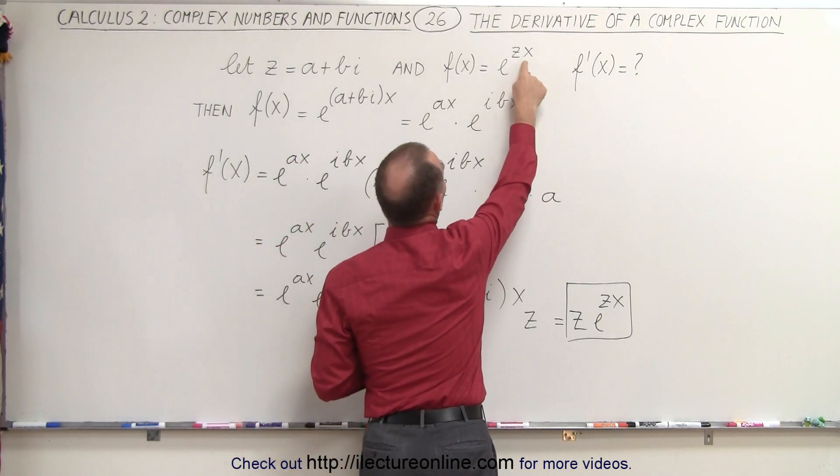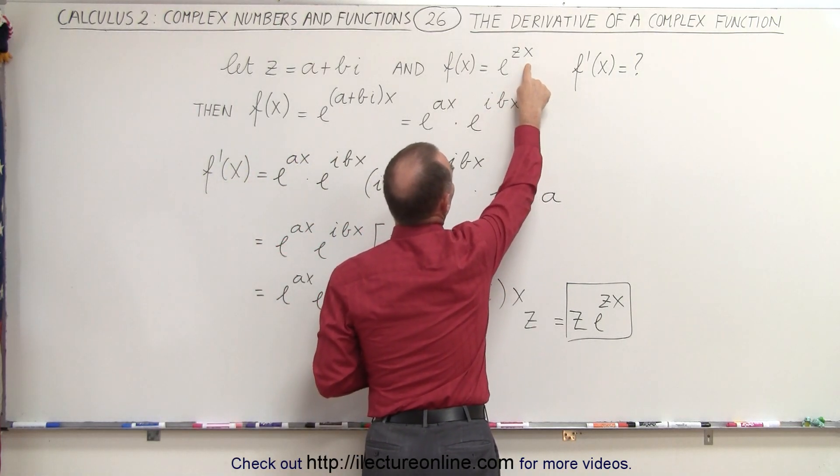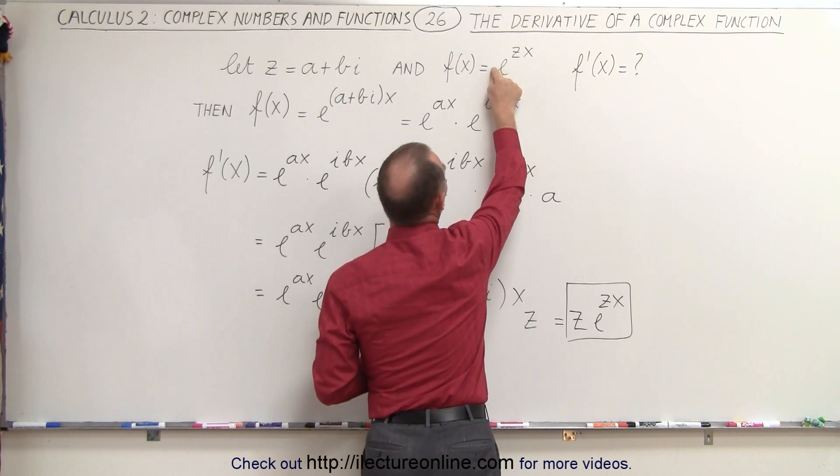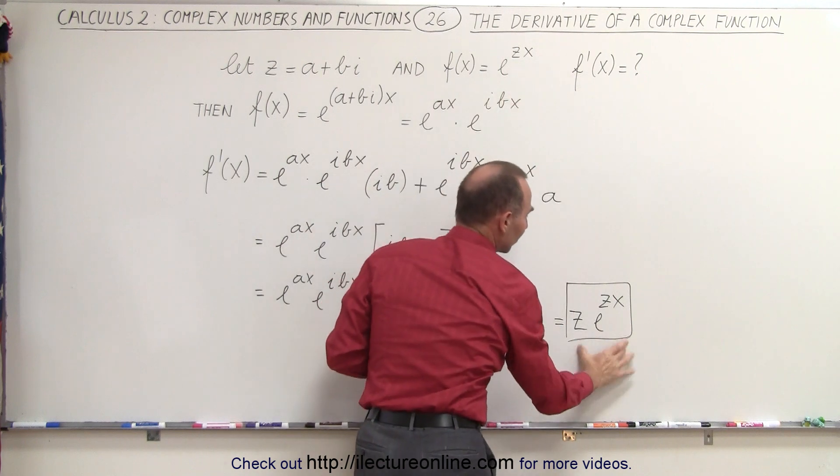well, if you take the derivative of e to the zx, we simply rewrite it. That would be e to the zx times the derivative of the exponent, which is z times e to the zx, which is exactly what we got.